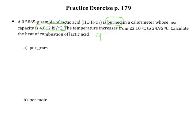Now we're just going to use Q equals C times delta T. So all we need is the heat capacity of the calorimeter and the change in temperature.